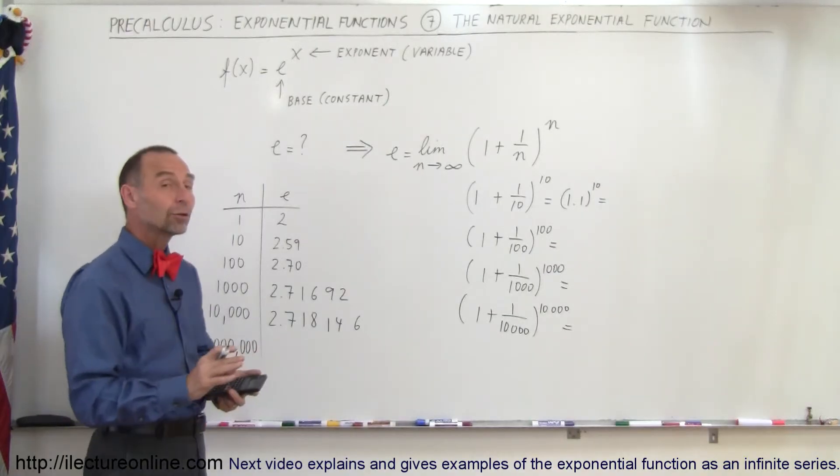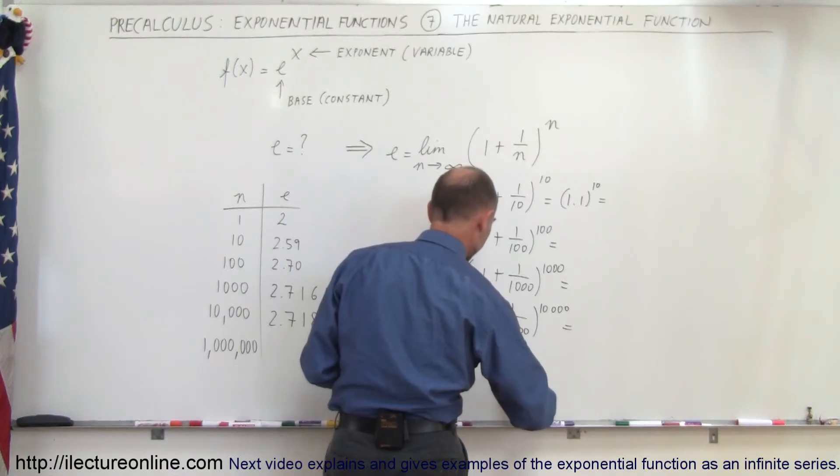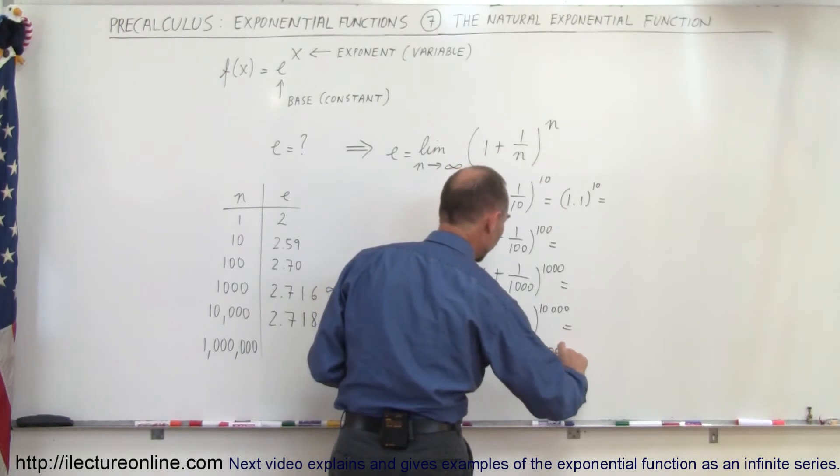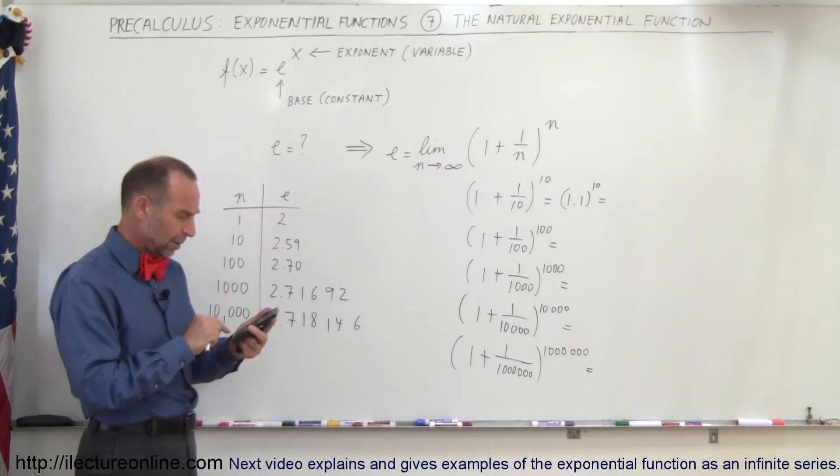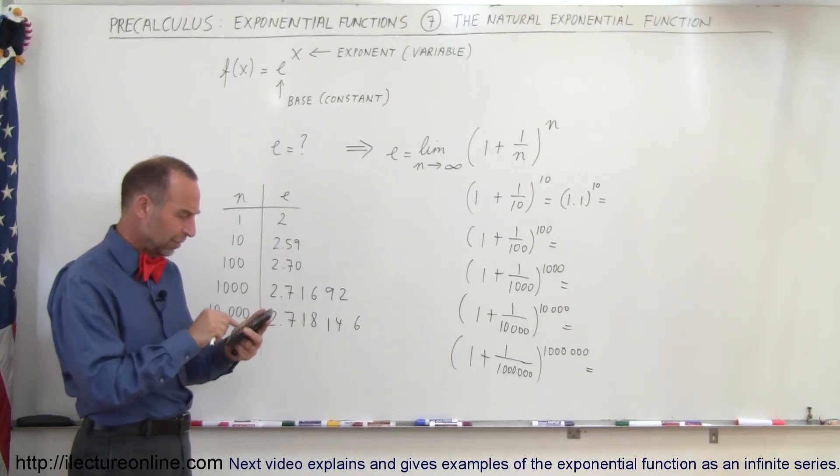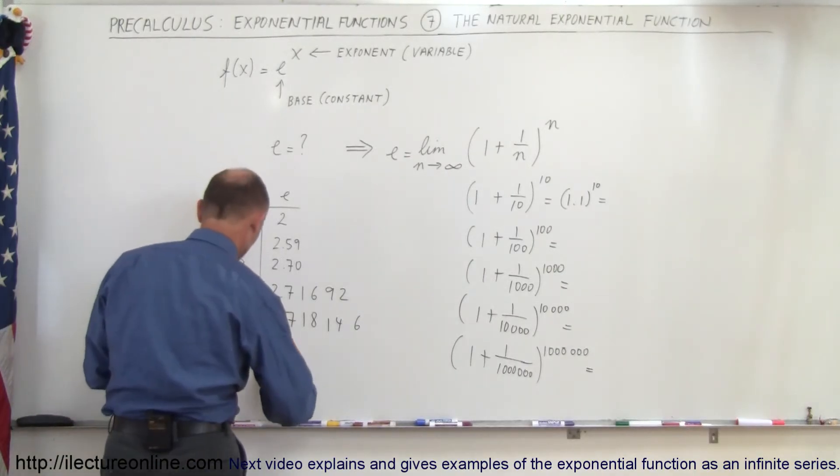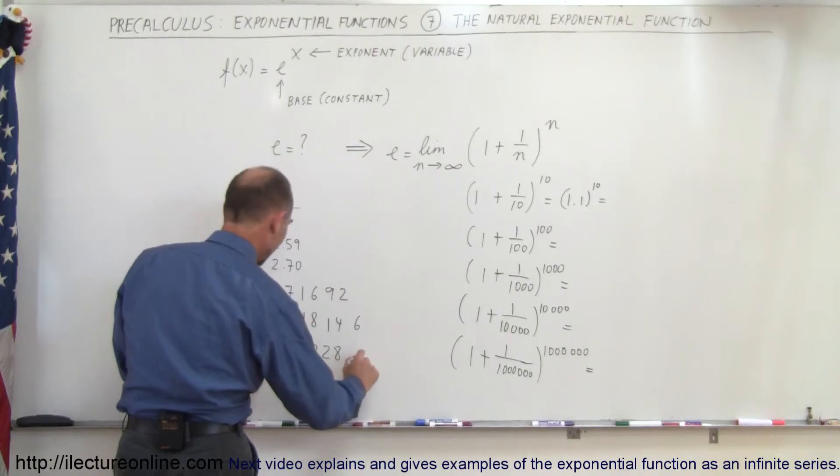Continuing, now we're going to plug in a million. So we have 1 plus 1 over a million raised to the 1,000,000 power. So we have 1.000001 raised to the 1,000,000 equals, good thing we have these calculators, otherwise it would be a long job trying to figure that out.